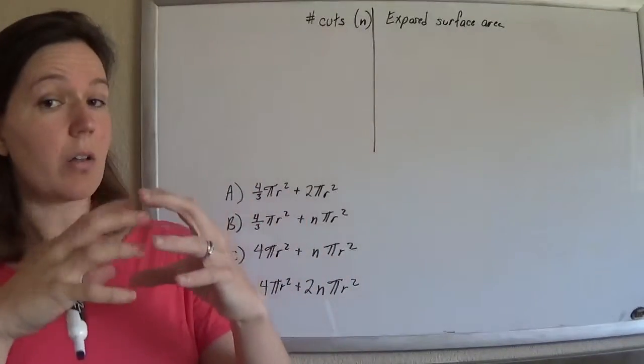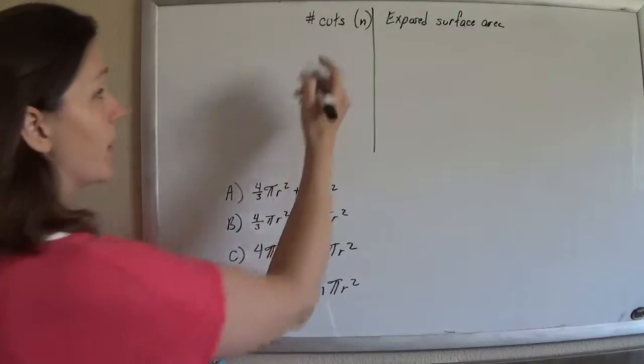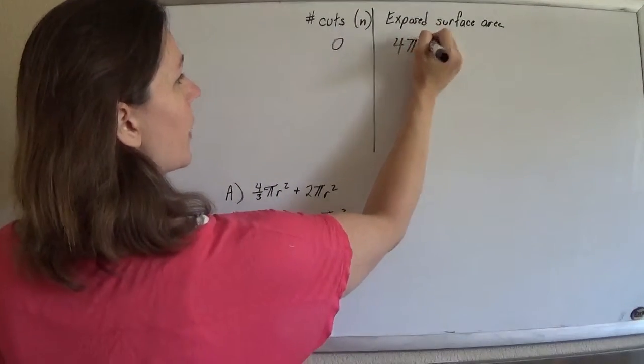Okay, so if we don't cut the sphere at all, we have the full surface area of the sphere, which is 4πr². So if we make zero cuts, 4πr².